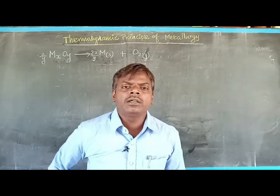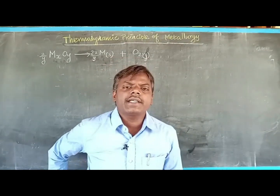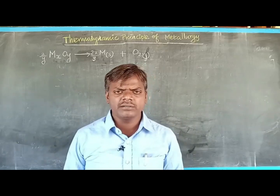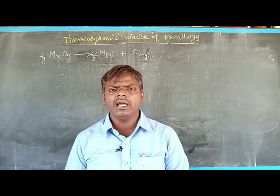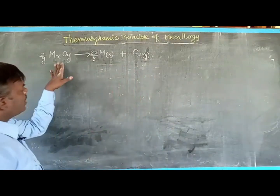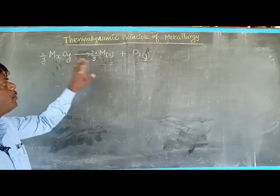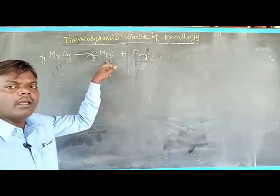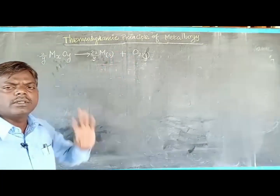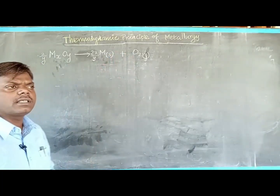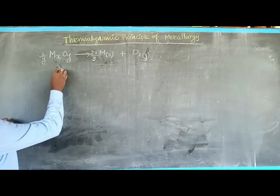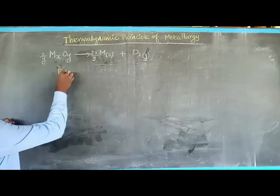We already know that a metal oxide can be reduced to metal by using some reducing agent. Consider a metal oxide MxOy which can be reduced to metal by using some reducing agent. For this reduction we can use two types of reducing agent.